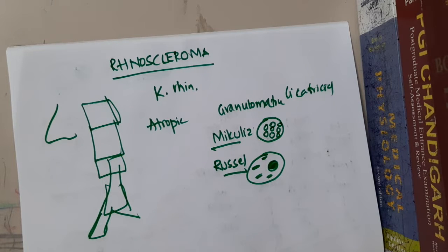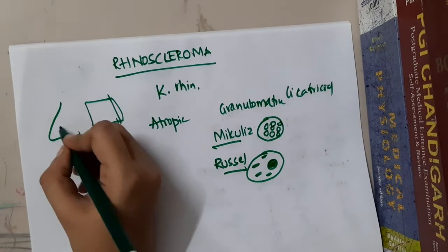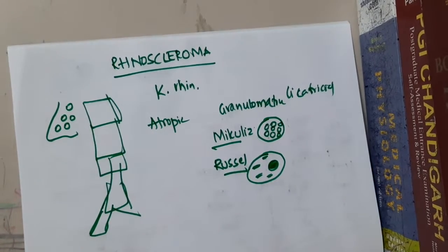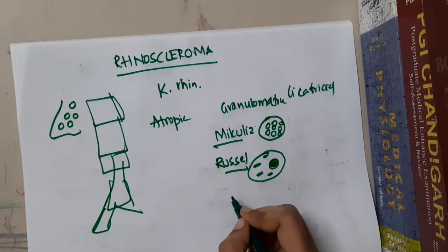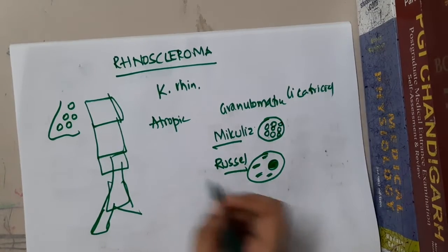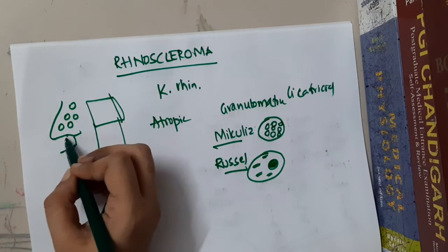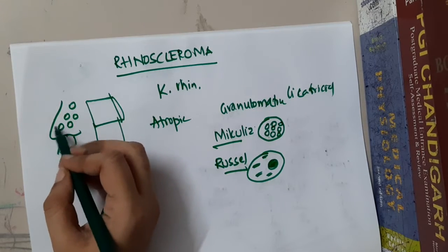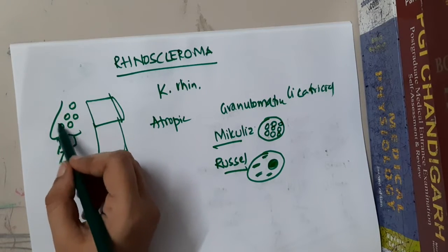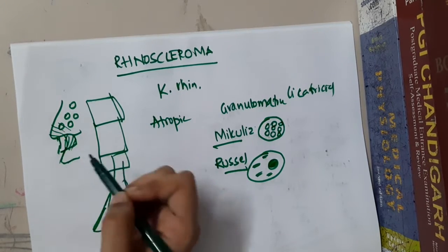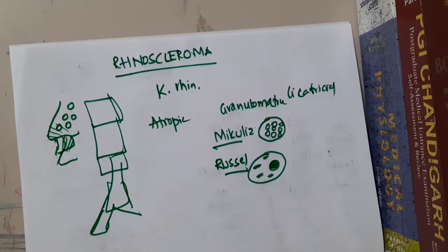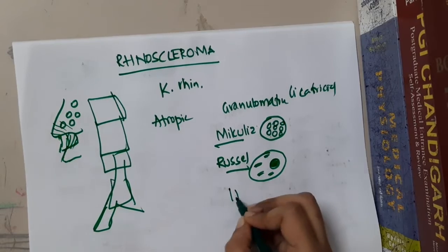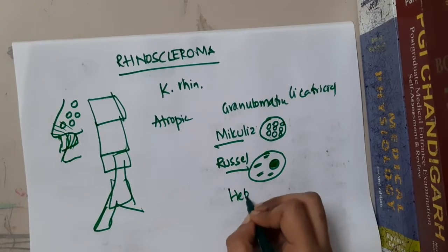In the granulomatous stage, there will be painless nodules seen in the nose, and there will be dermal infiltration in the upper nose, lower part of the nose, and upper lip. This dermal infiltration leads to a woody feel and results in hebra nose.